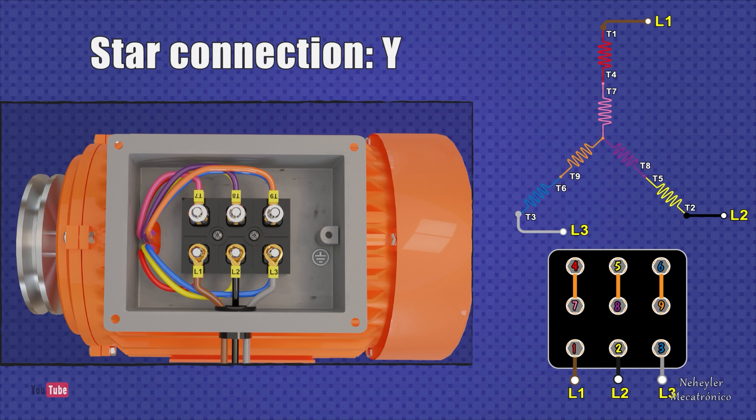Finally, the power terminals Line 1, Line 2, and Line 3 must be connected to Terminals 1, 2, and 3 respectively. The protective ground cable must also be considered, which must be connected to the metal part of the motor casing.